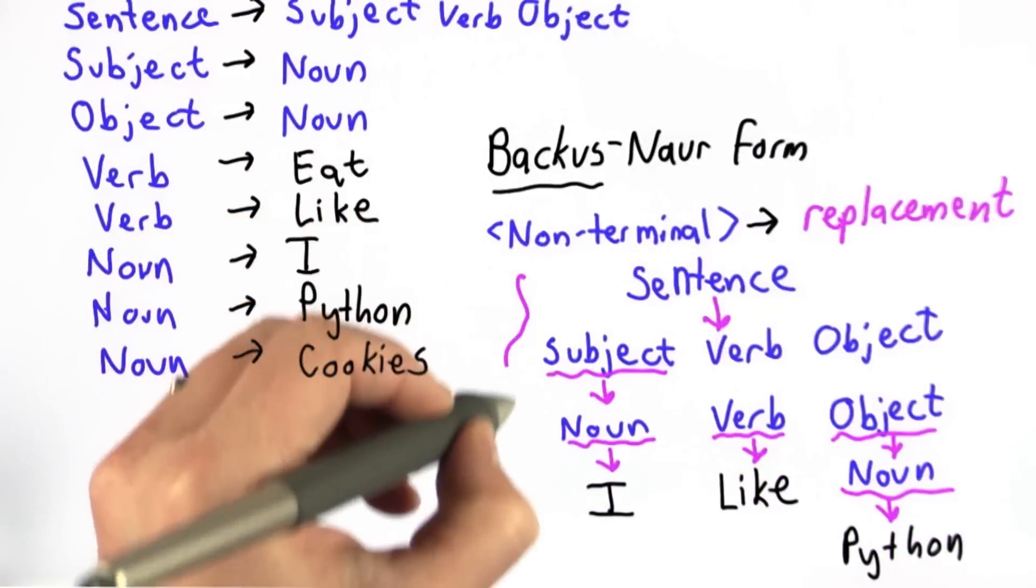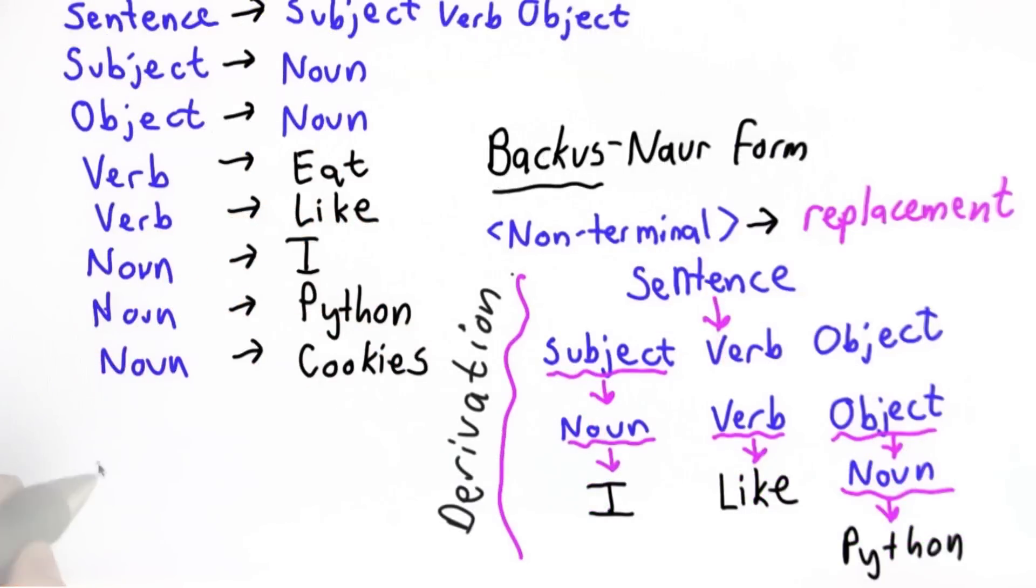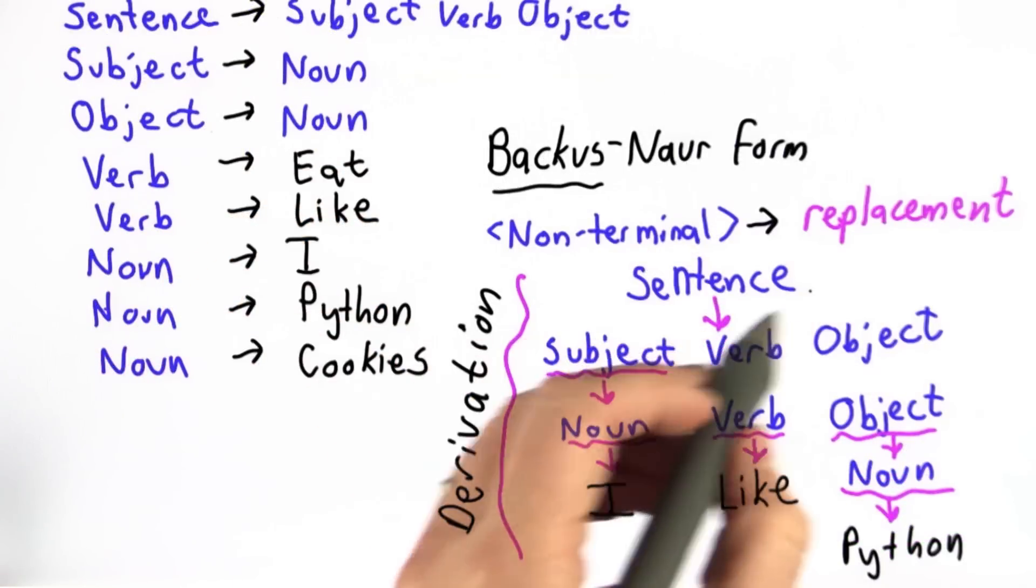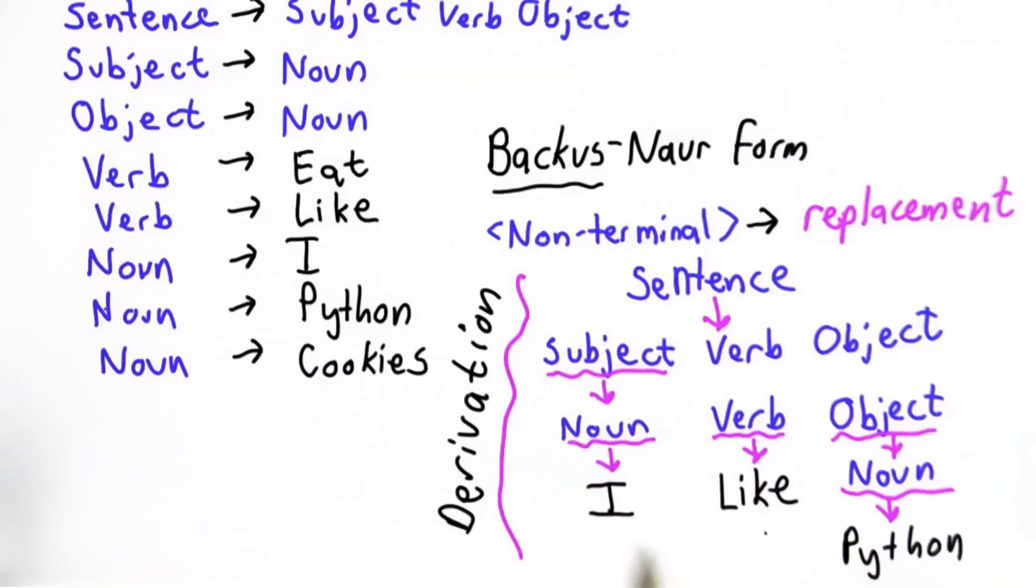So what I've done here is what's called a derivation. And a derivation just means starting from some non-terminal, follow the rules to derive a sequence of terminals. We're done when we have only terminals left. And we can derive a sentence in the grammar.